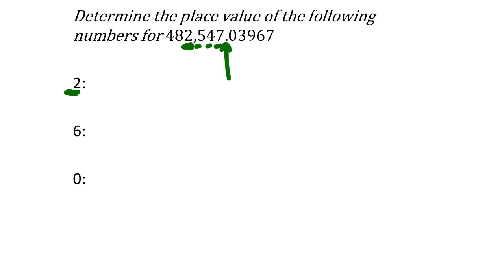Let's determine the place value of specific digits. For the number 482,547.3967, we need the place value of the 2. The decimal is here, and the 2 is one, two, three, four place values to the left of the decimal. Going through each: ones, tens, hundreds, thousands - so the 2 is in the thousands place. That's a regular thousand, not 'thousandths.'